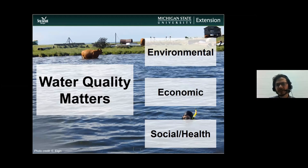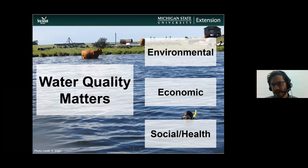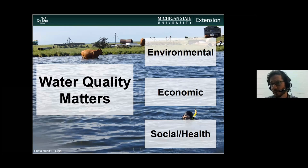Moving on to the social side of things, our sense of place is connected to the water here in Michigan because we have so much of it. That connection is also tied to the quality of that water, and as water quality declines it impacts our sense of place. Then moving into health, there are obvious impacts if there are contaminants toxic to our health — short-term and long-term — whether it's E. coli or industrial contaminants.